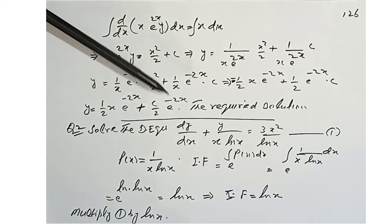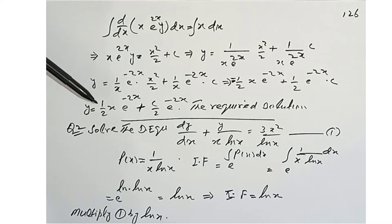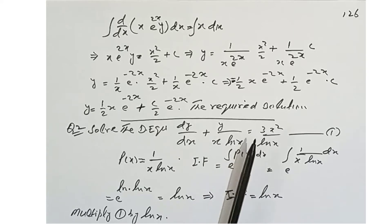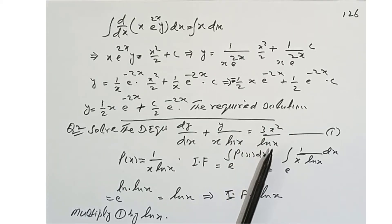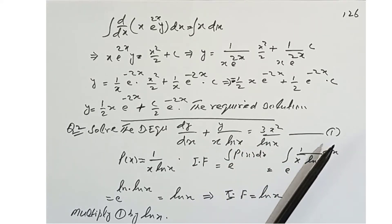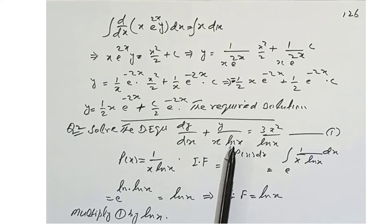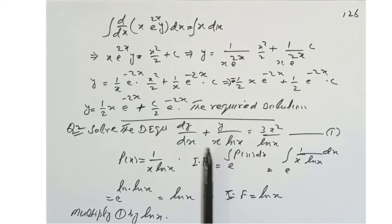This is the required solution of the given differential equation. Question 2: solve dy/dx + y/(x·ln x) = 3x²/ln x. This equation is linear in y, and the value of P is the coefficient of y, which is 1/(x·ln x).